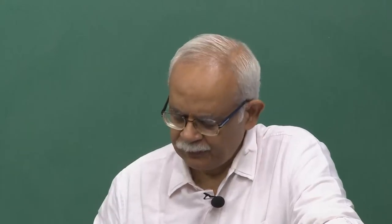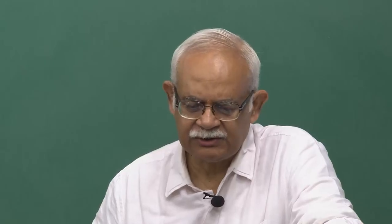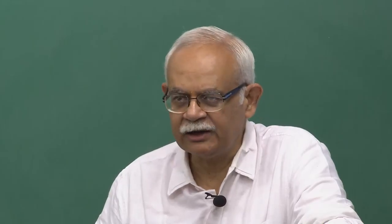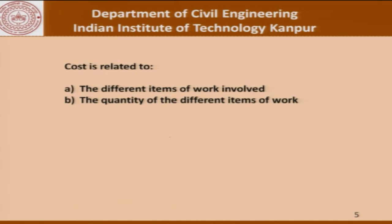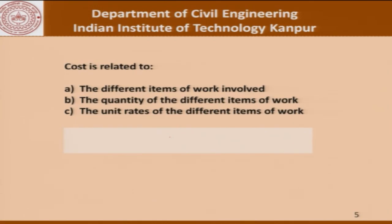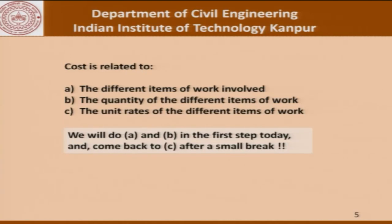In order to estimate the cost, we need to know what the cost is related to. The first thing is: what are the different items of work involved? Then, what is the quantity of each item? And finally, what is the unit rate of each item? Today we will look at items and quantities first, then come back to unit rates after a small break.